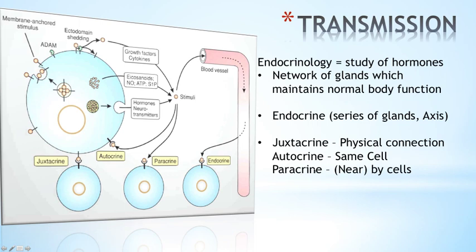There is also paracrine secretion — paracrine meaning nearby secretion. So let's say this cell is producing clotting factors. If you have an injury and are bleeding, you need clotting factors to produce a hemostatic plug. This cell produces those clotting factors, which are then used by nearby cells.